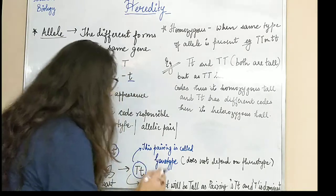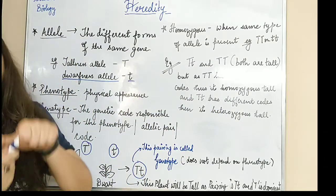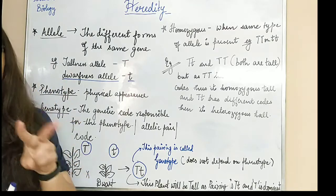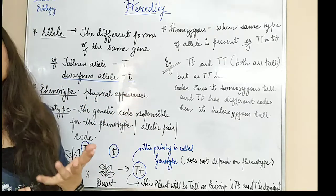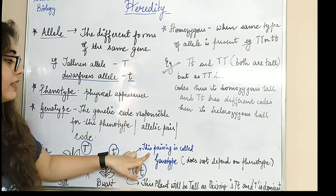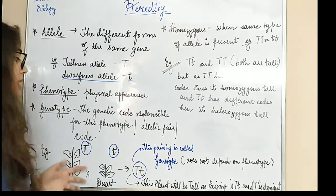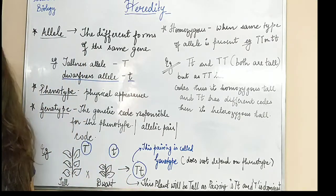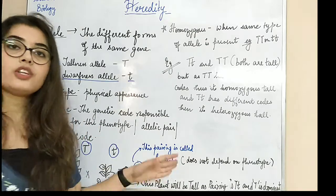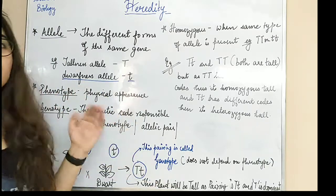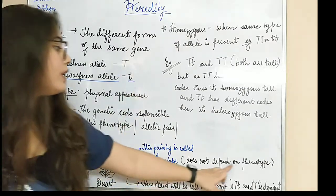Now, these pairings — capital T small t, small t small t, capital T capital T — these are allelic pairs, which are genotypes responsible for your phenotype. This pairing is called genotype — a set of alleles which are responsible for the genetic basis of that particular organism. And genotype does not depend upon phenotype; it is phenotype that depends on genotype.